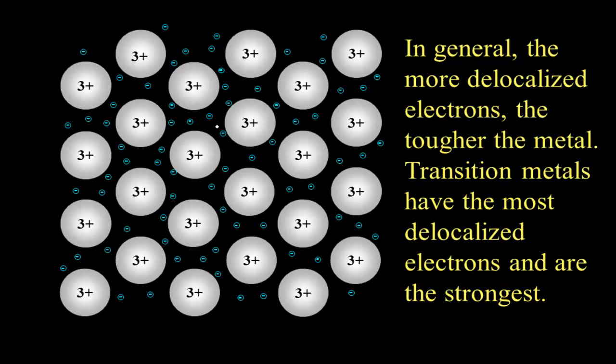Transition metals in particular, like titanium and molybdenum, each of which contribute to a large amount of valence electrons to the sea, they are very tough metals, very strong, very high melting points.